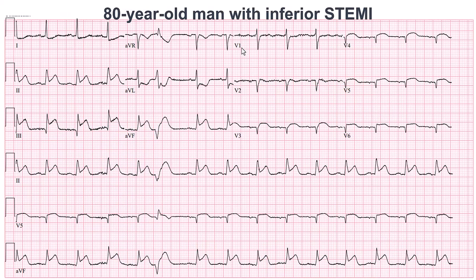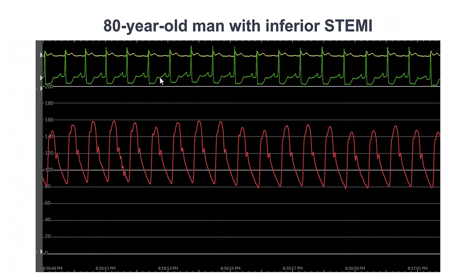The patient was an 80-year-old gentleman who came with an inferior ST-segment elevation myocardial infarction, with fairly large ST-segment elevation in the inferior leads, as well as from lead V3 through V6, and reciprocal ST-segment depression in the lateral leads. The patient came to the cath lab with a systolic pressure of 160 and significant ST-segment changes.